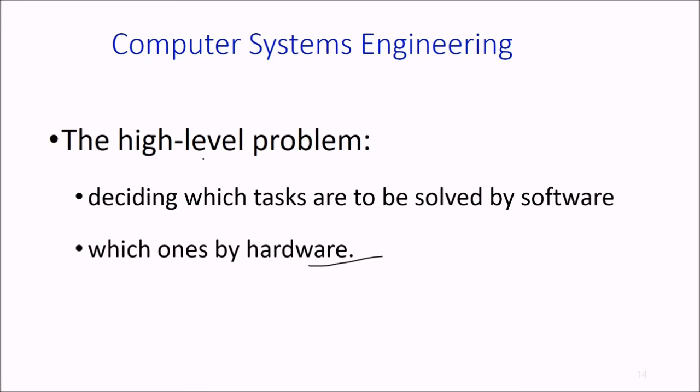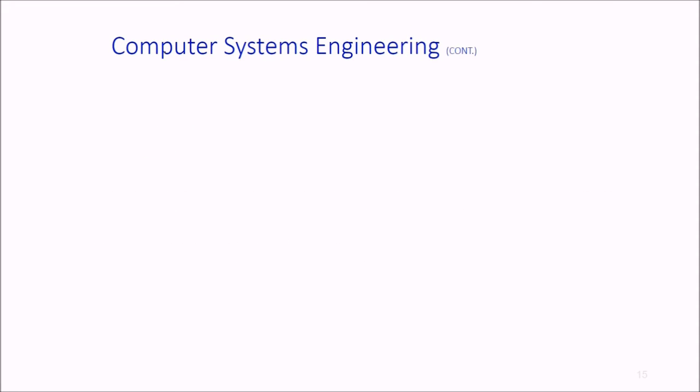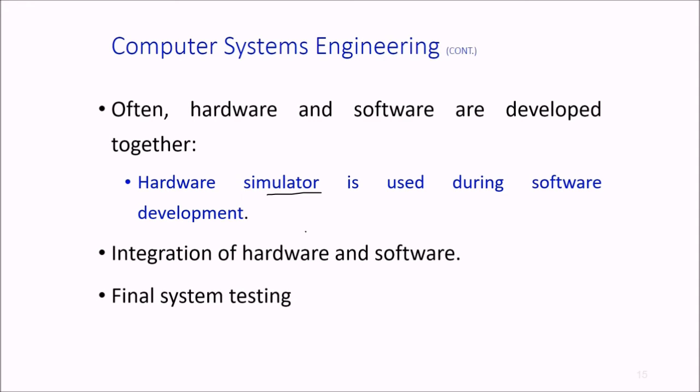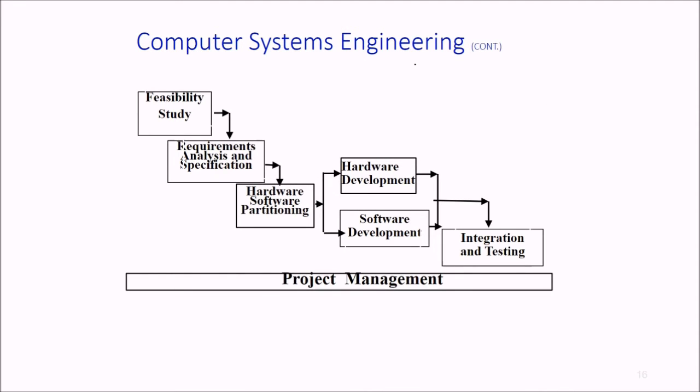Hardware and software are developed together. A hardware simulator is used during software development. Then we integrate hardware and software, combine them, and perform system-level testing. Computer system engineering includes feasibility study, requirements analysis, specification, hardware-software partitioning leading to separate hardware and software development, then integration and testing, which we call project management.